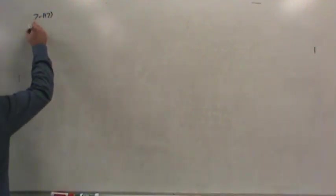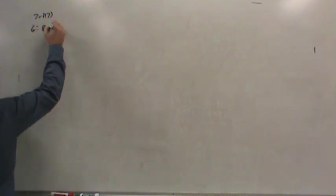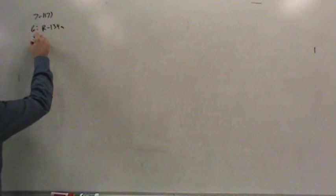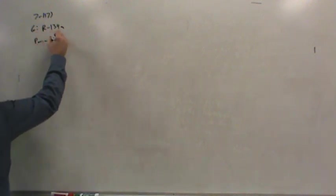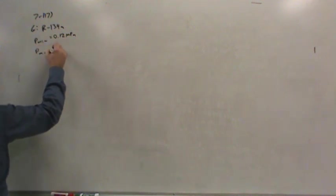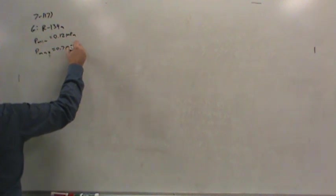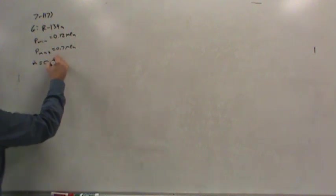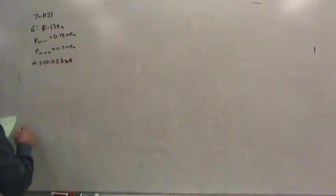What are we given here? It's an ideal vapor compression refrigeration cycle using R134A as the working fluid. The minimum pressure is 0.12 megapascals and the maximum pressure is 0.7. The mass flow rate of the refrigerant is 0.05 kilograms per second.